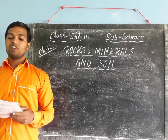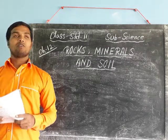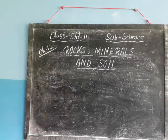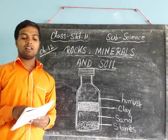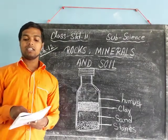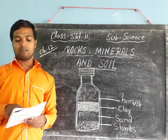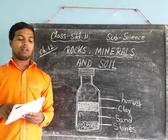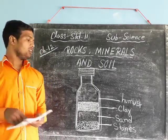The color also depends on the amount of humus present. Soil is made up of gravel, sand, clay, and humus.